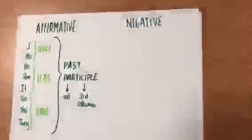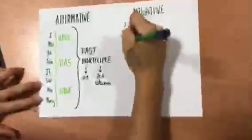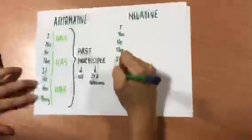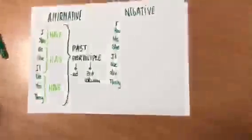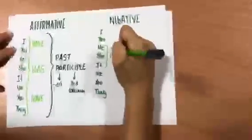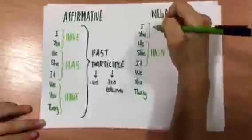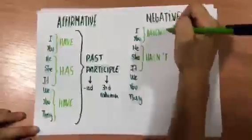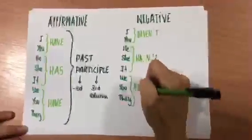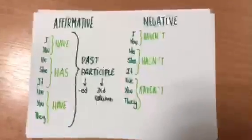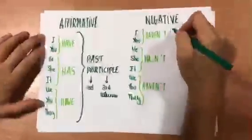To do the negative of the present perfect, we put I, you, we, and they with have, and with he, she, or it, we put has. And then we add the past participle.